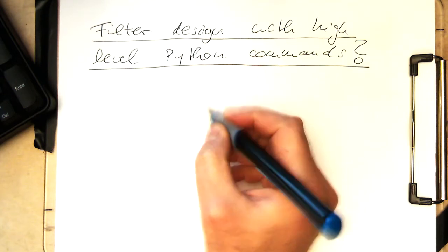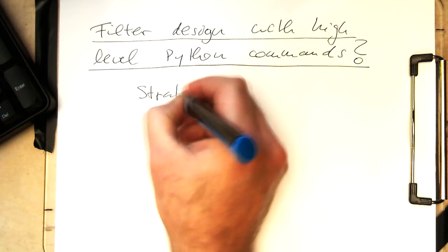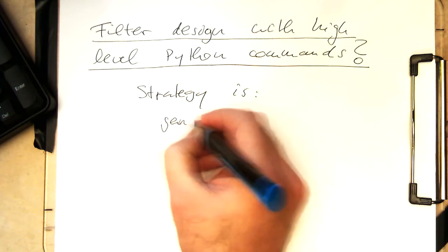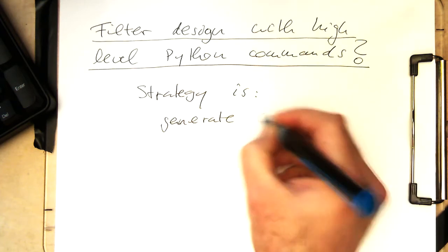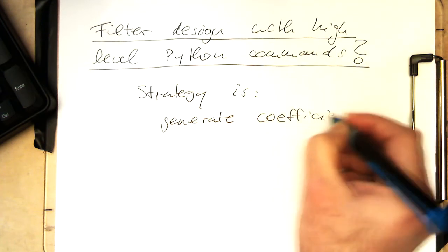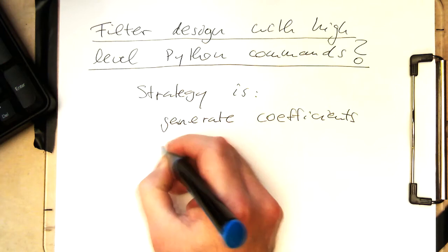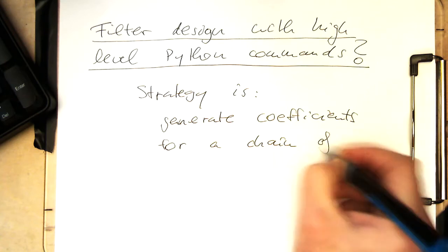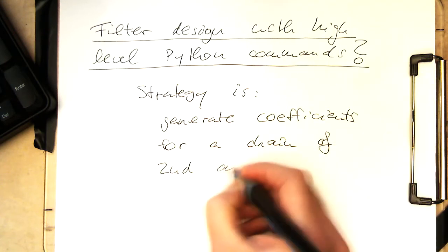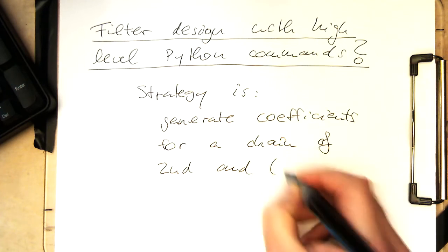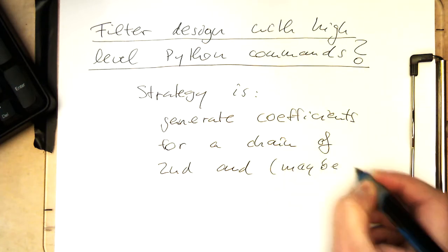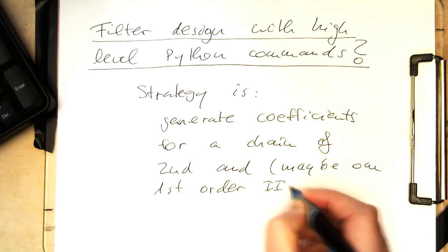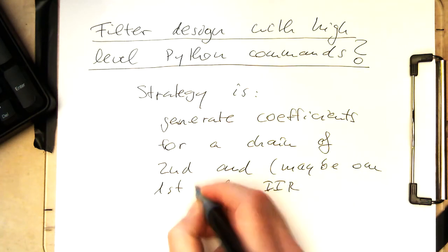The general strategy is to generate coefficients for a chain of 2nd and 3rd, maybe one first order IIR filter.